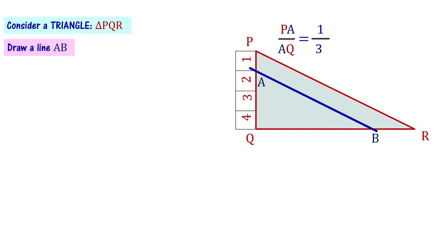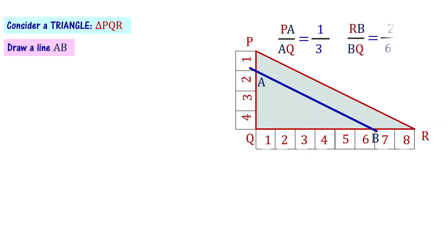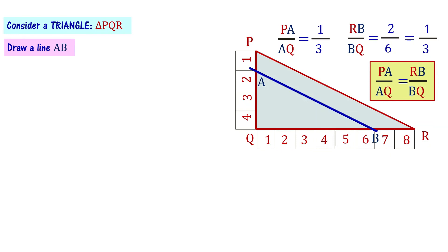This is not valid only for this particular triangle. I can take the measure of side QR — BR by BQ equals 1 by 3. Now we can say PA by AQ equals RB by BQ. The line AB divides sides PQ and QR of the triangle in the same ratio. Looking at the picture, line PR and line AB are parallel lines — they are not going to intersect anywhere. AB is parallel to PR.